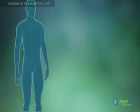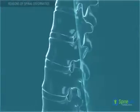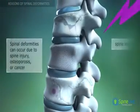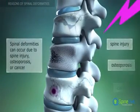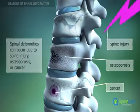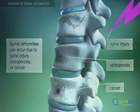One of the main causes of spinal deformities are compression fractures of the vertebrae. These can occur due to spinal injuries, osteoporosis, or cancer in the vertebral body.